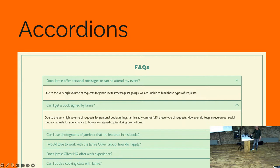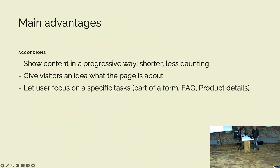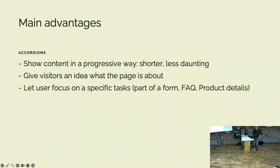Let's go quickly to the first topic: accordions. Well known, I think, for everybody — the most well-known example is probably the FAQ. An accordion is a list of headers that you can click to expand, revealing a panel with more information. It shows content in a progressive way, making the page much shorter and less daunting. It's great for mobile devices and gives visitors a kind of table of contents, letting users focus on one very specific task.